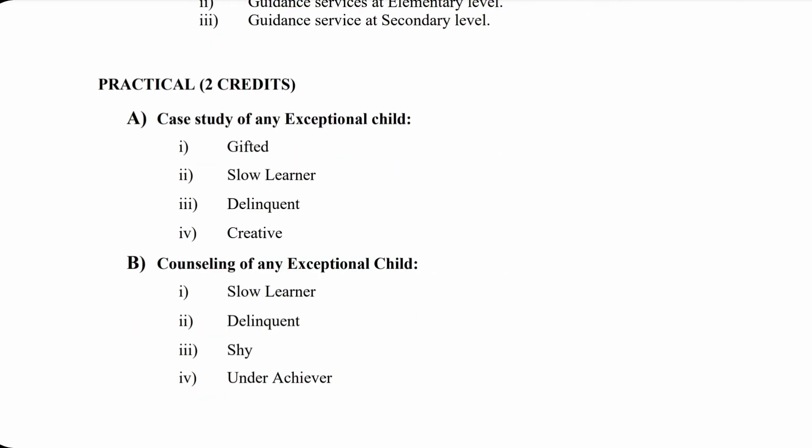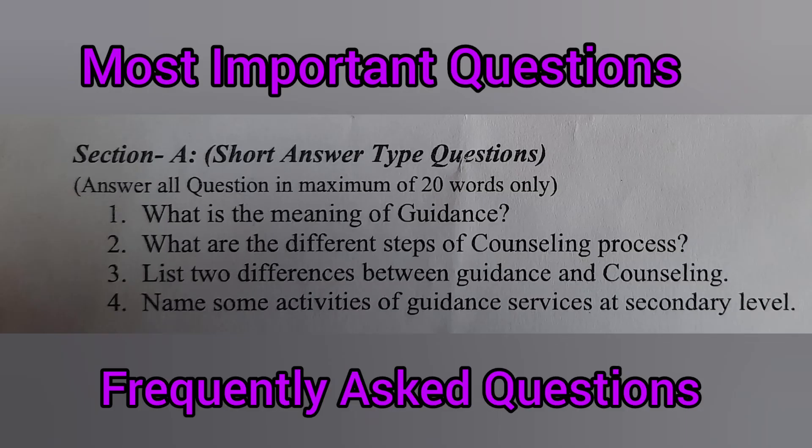A. Case Study of Any Exceptional Child — Number 1: Gifted, Number 2: Slow Learner, Number 3: Delinquent, Number 4: Creative. B. Counseling of Any Exceptional Child — Number 1: Slow Learner, Number 2: Delinquent, Number 3: Shy, Number 4: Underachiever.